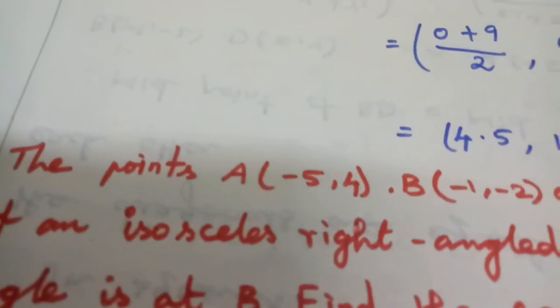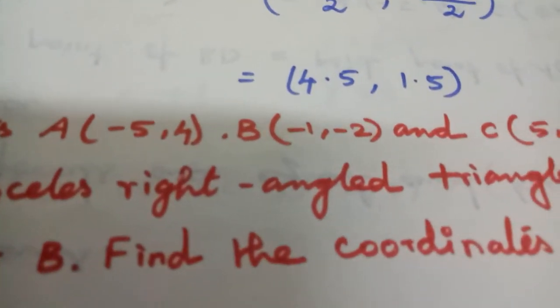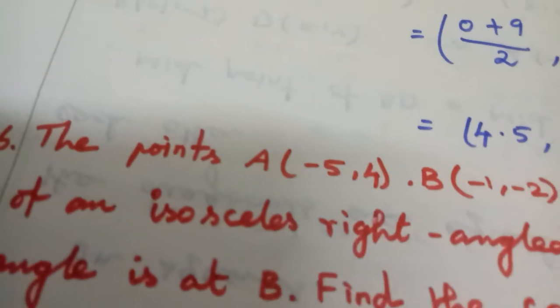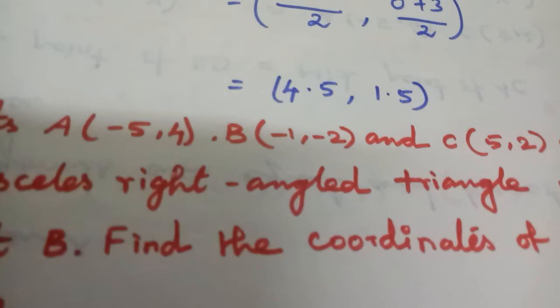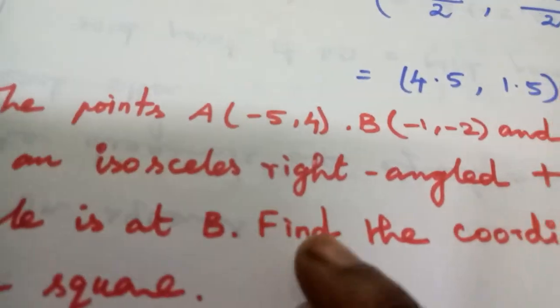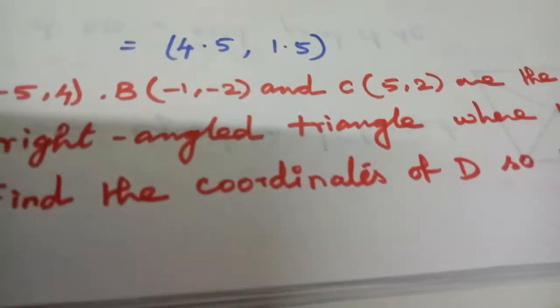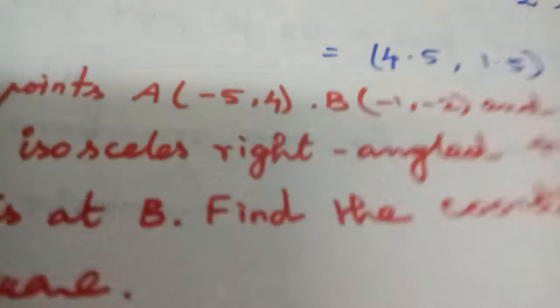Next problem: The points A(-5,4), B(-1,-2), and C(5,2) are the vertices of an isosceles right-angled triangle. The right angle is at B. Find the coordinate of D so that ABCD is a square.